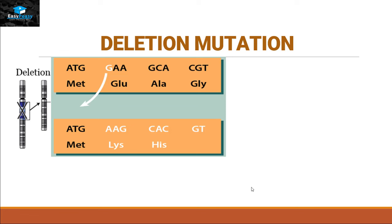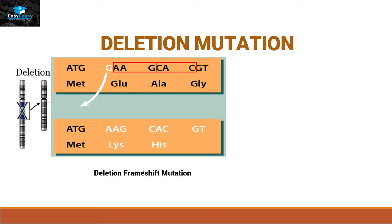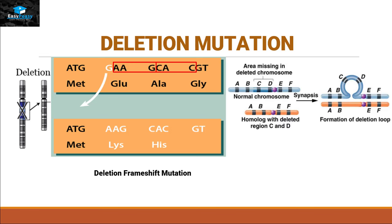Now let's talk about deletion frameshift mutation. We have nucleotides here and three nucleotides code for one amino acid. If this guanine gets lost and degraded, the two adenines will take this guanine's place and synthesize another amino acid — lysine. The other two nucleotides will take the third nucleotide from glycine and will make histidine. By this way, all the patterns of amino acids will get changed, and this type of deletion is called a deletion frameshift mutation. During meiosis or mitosis at the synapses stage, we will see a loop forming by the normal chromosome on the deleted part of the chromosome.